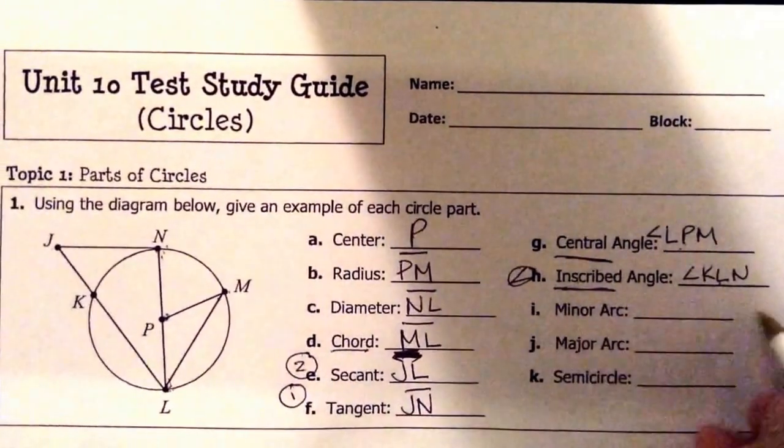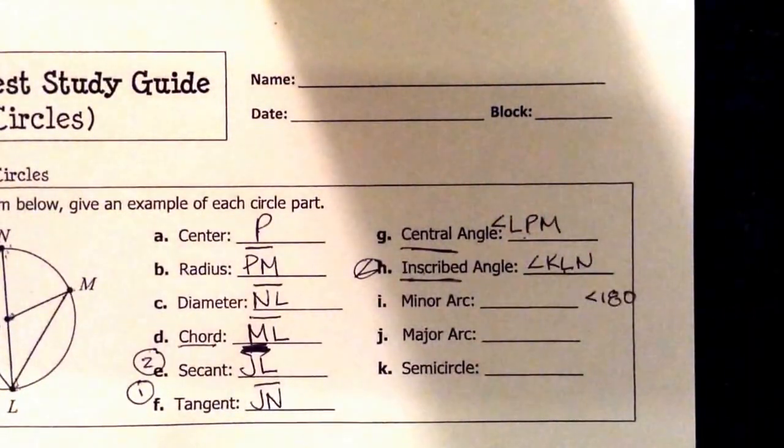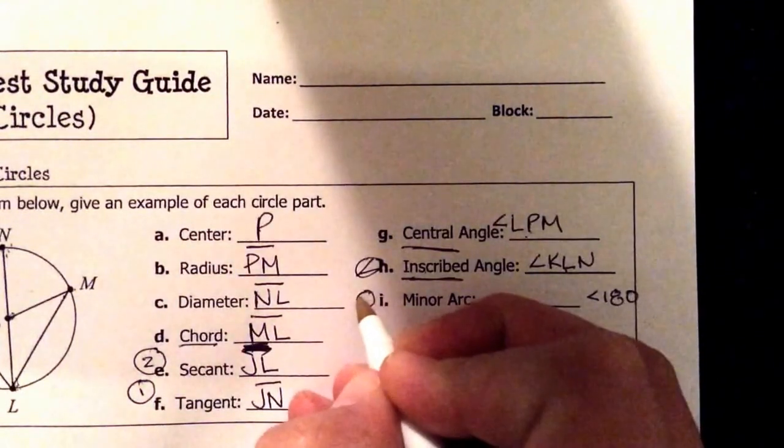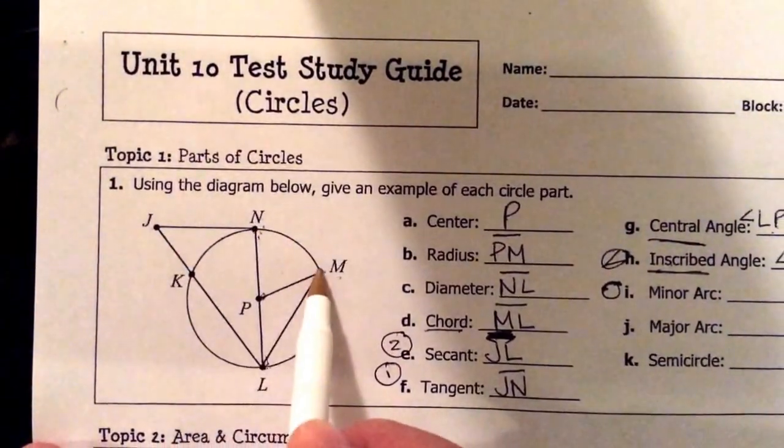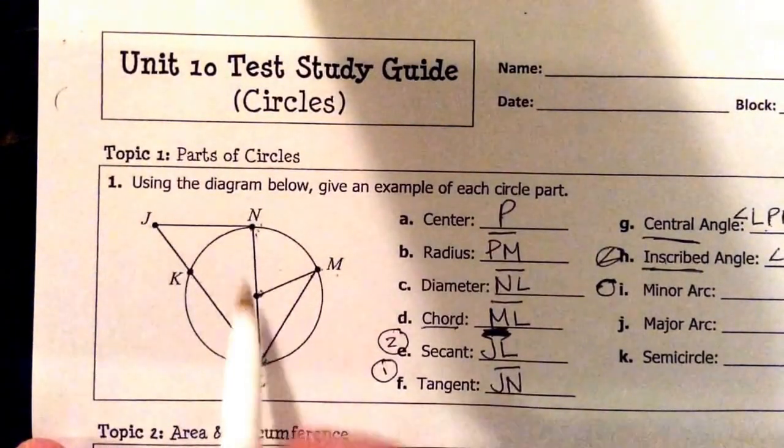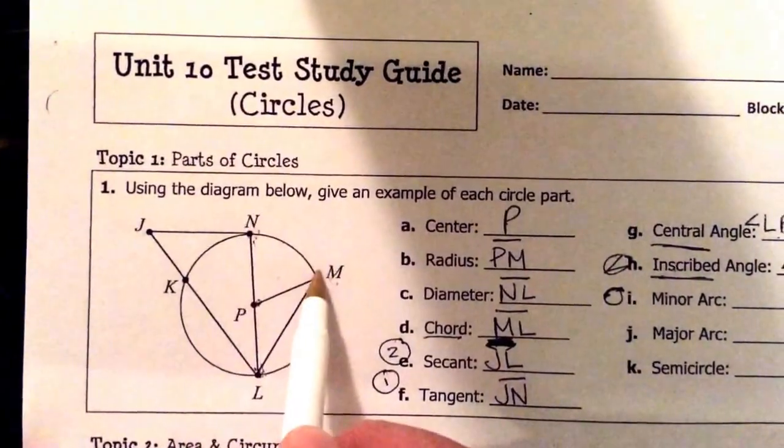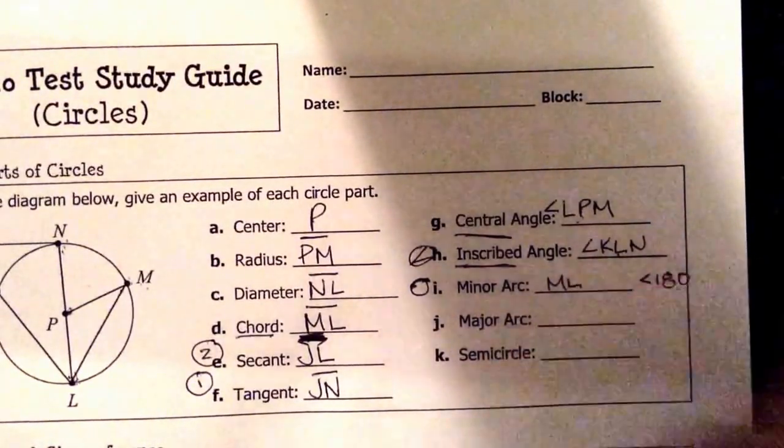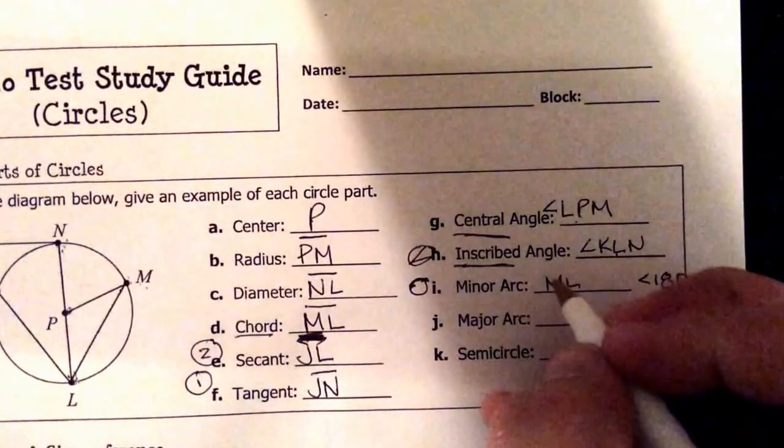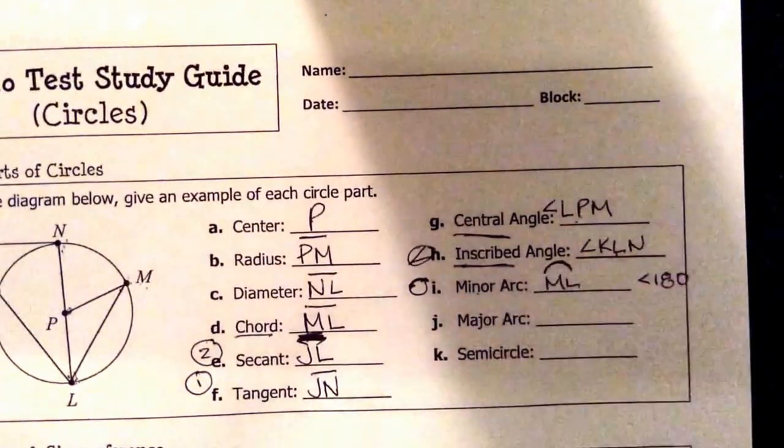A minor arc is anything that is going to be less than 180 degrees. So we're looking for along the edge of the circle, kind of think like the crust, and it has to be less than half a circle. So we have choices here. We have NM, ML, but we can't choose this one over here because it's a semicircle, which is 180 degrees. So let's choose NM or ML. Let's go with ML. And the notation for an arc is, a minor arc has two letters. Notation for an arc has the curved symbol above it.